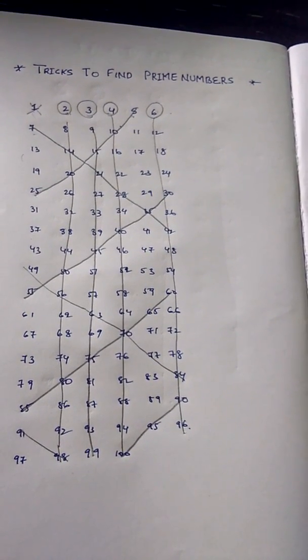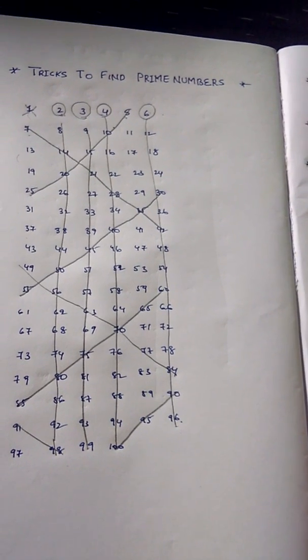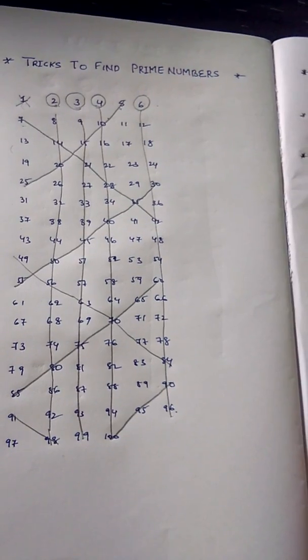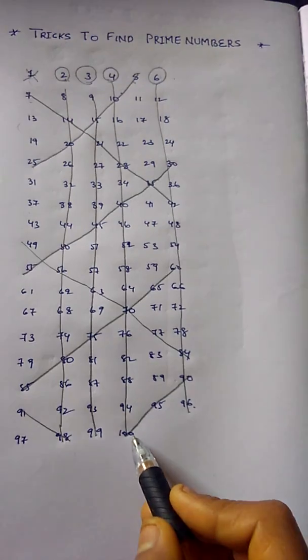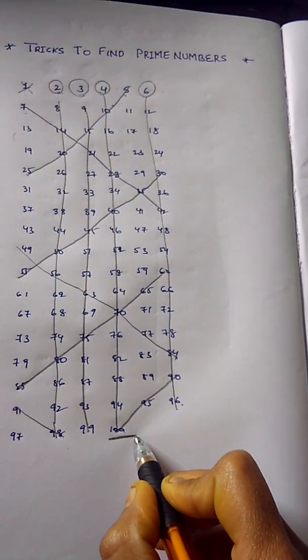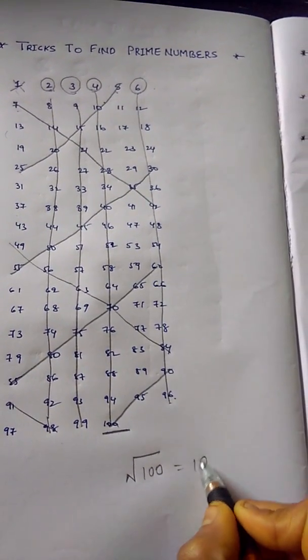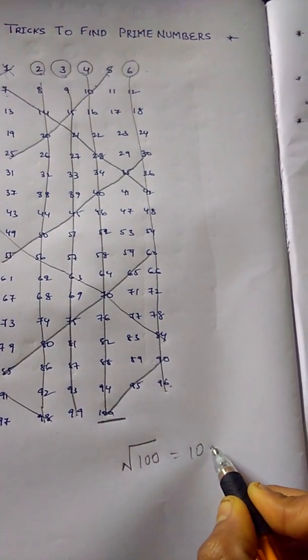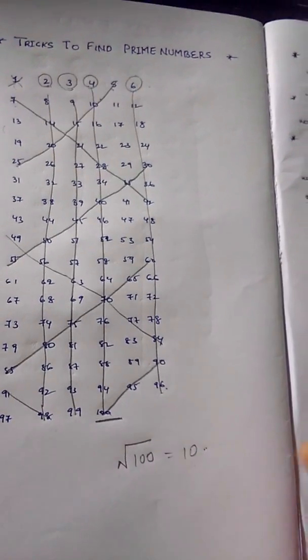One question which arises is why I stopped at 7 and why didn't I move to the next. See, as I've taken up to 100, the highest number is 100 and the square root of 100 is 10. So you just need to consider below 10. So 8 and 9 are not prime numbers.